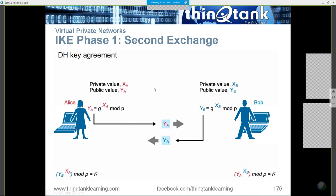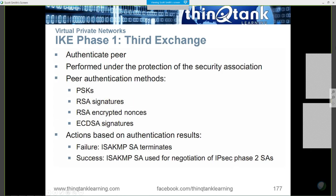That goes to this whole concept of it being easy to create but difficult to uncreate. The third exchange is to authenticate the peer, typically done with a pre-shared key, though we can use RSA signatures as well. If I can't authenticate the peer, the tunnel is not negotiated. If I can authenticate the peer, that's when we move into phase two — the bulk encryption process.